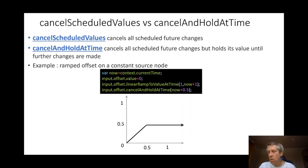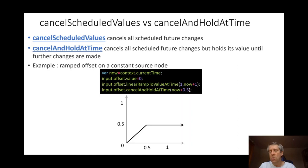That concludes this short lecture on parameter automation — looking at automation as a concept in audio production and sound design, and how it's implemented in the Web Audio API. There are plenty of other things that can be done with automation. We'll talk about other mixing aspects, grouping of sources, and also randomly setting parameters for experimental sound design in later lectures. Please get in touch if you have any questions or comments, and thank you very much.